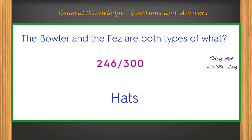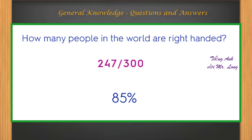The bowler and the fez are both types of what? Hats. How many people in the world are right-handed? 85%.